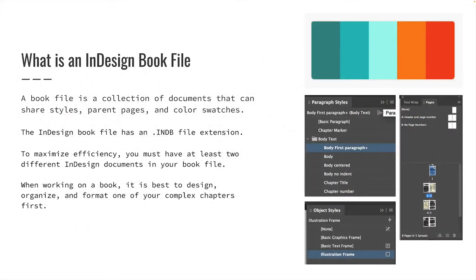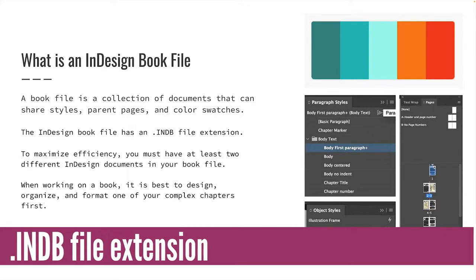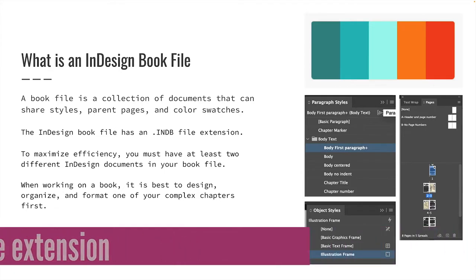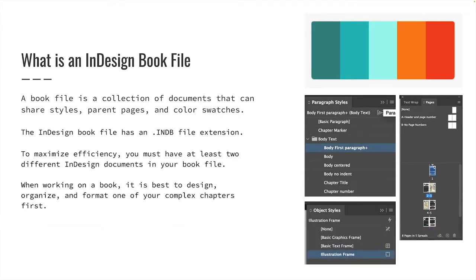An InDesign book file is a collection of documents that can share styles, parent pages, and color swatches. The InDesign book file has a .indb file extension. To maximize the power of the InDesign book file feature, you must have at least two different InDesign documents in your book file. The book panel lets you keep all your files in sync and manages your InDesign files.